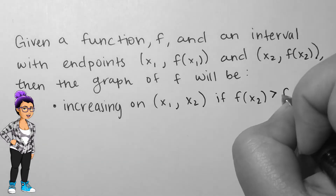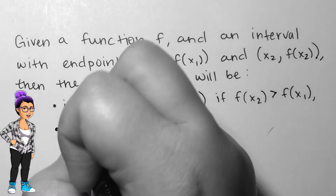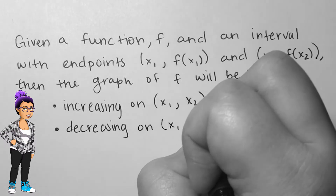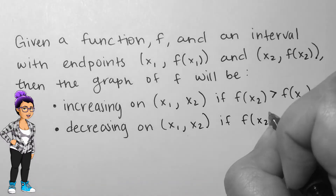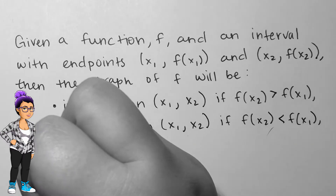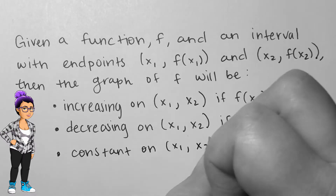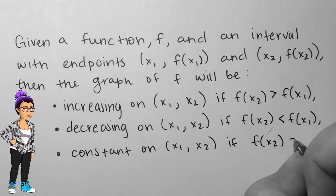The graph will be decreasing on that interval if f of x2 is smaller than f of x1, and it will be constant on that interval if both outputs are the same.